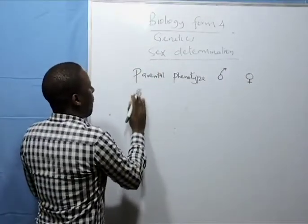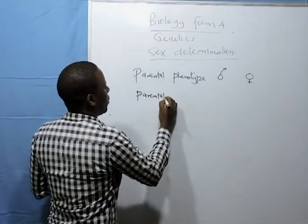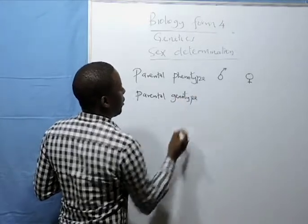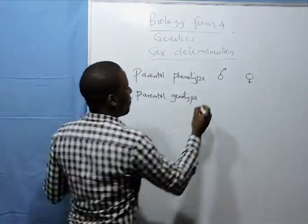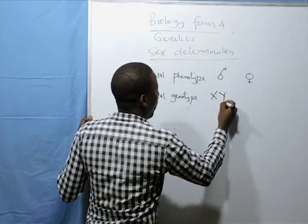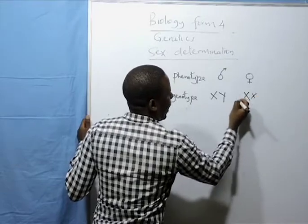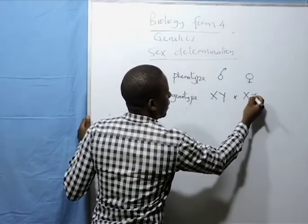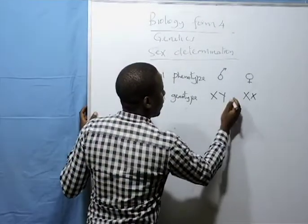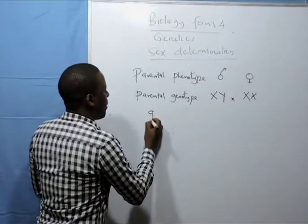Then parental genotype. We have the male, XY. We have the female, XX. Then we cross them. They will form gametes.